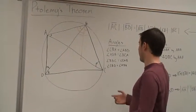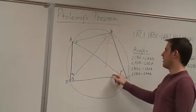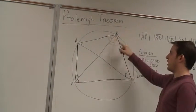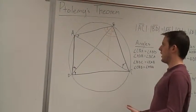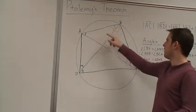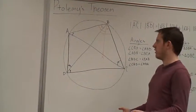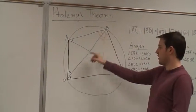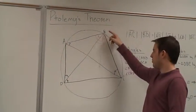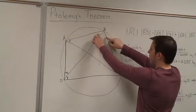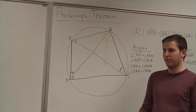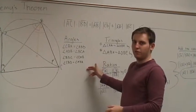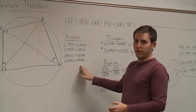We are going to draw a point K on the diagonal AC such that the measure of angle CBK is equal to the measure of angle ABD. To demonstrate these equivalent angles, we have marked them on the diagram. What's important to notice is that the measure of angle CBD is equal to the measure of angle ABK. This is true because when two angles are equal and we add a similar value to each side, they remain equal.